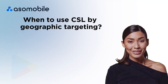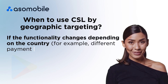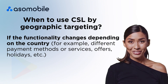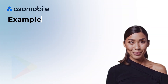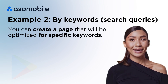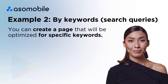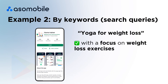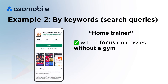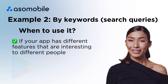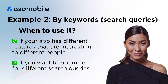When to use it? If the functionality changes depending on the country — for example, different payment methods or services, offers, holidays, etc. Example 2: By keywords. Through search queries in Google Play, you can create a page optimized for specific keywords. For example, if you have a fitness app, you can make CSLs separately for 'yoga for weight loss' with a focus on weight loss exercises, or 'home trainer' with a focus on classes without a gym. Use this when your app has different features that are interesting to different people, or if you want to optimize for different search queries.